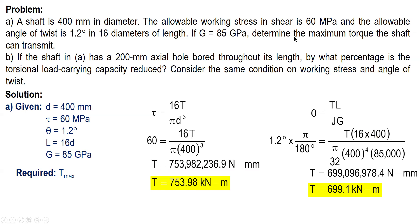The question asks for the maximum torque the shaft can transmit. From the two values, we select the smaller one to satisfy both conditions without violating either. If we used 753.98 kN·m, the resulting angle of twist would exceed 1.2 degrees, which is not allowable. Using 699.1 kN·m, the resulting stress would be less than 60 MPa, so it is safe. Therefore, the answer is 699.1 kilonewton-meters.